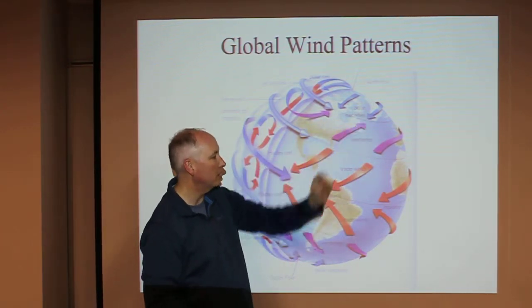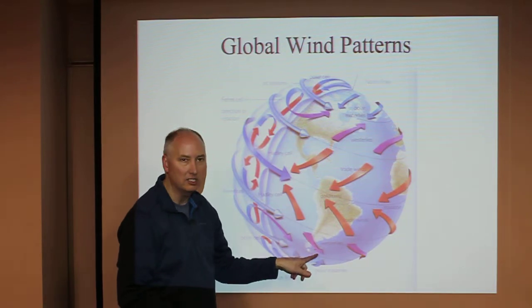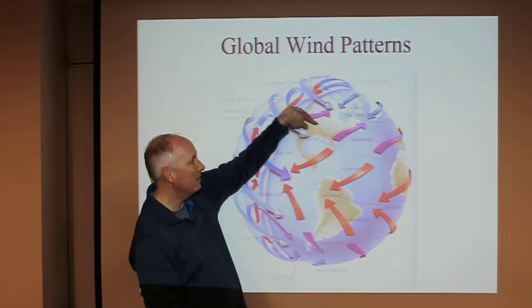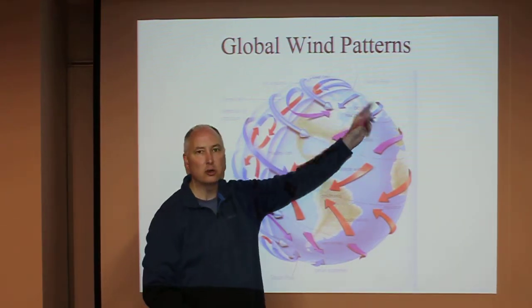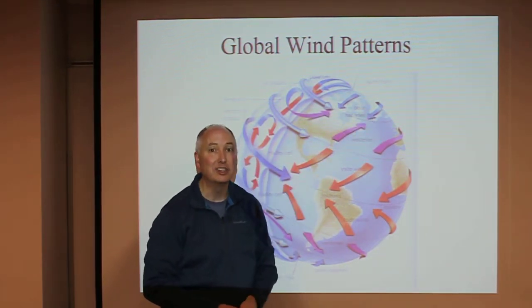Between 30 degrees north and 60 degrees north, and 30 degrees south and 60 degrees south, the winds are primarily from the west. We call these the westerlies. And in the polar regions, the winds turn around and are actually easterly again.